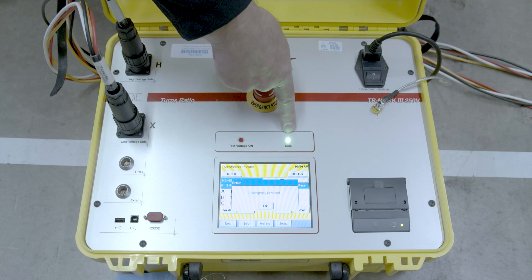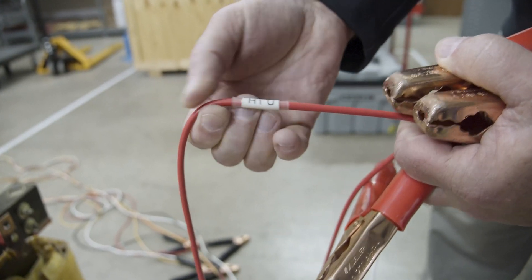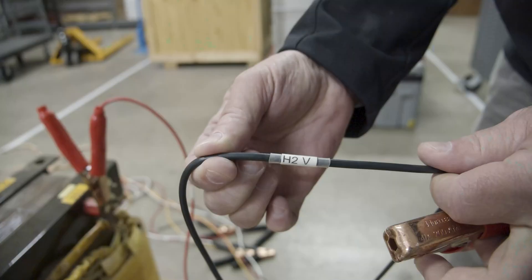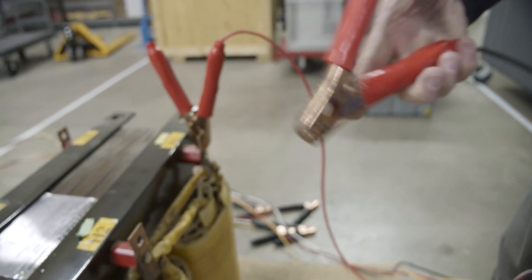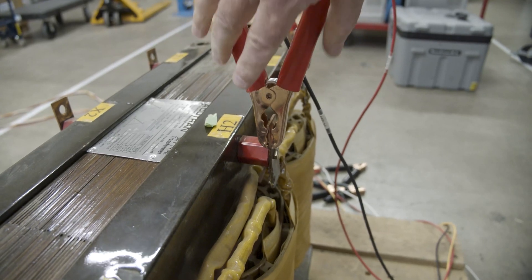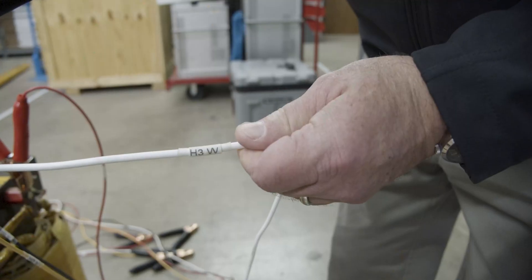Okay, so the connections of the test leads. You'll notice all of the high side leads have red insulated handles. This is the H1 lead, then the H2 we're connecting to the corresponding terminal of the transformer, and then the H3 lead as well.